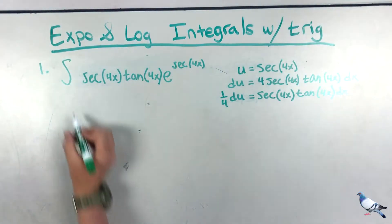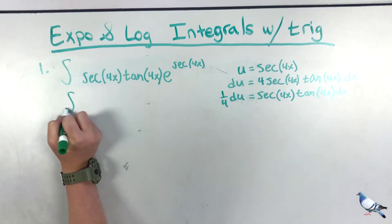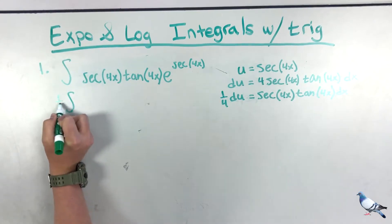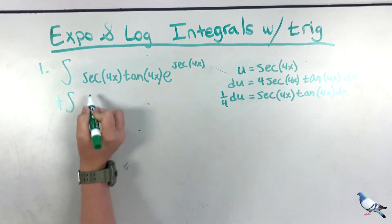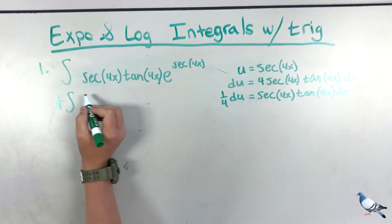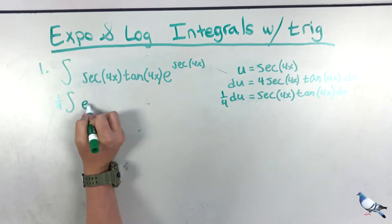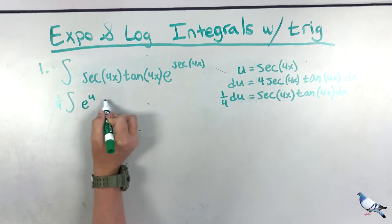Now we can rewrite the integral in terms of u. We move the 1/4 out front, and we're left with the integral of e to the u du.